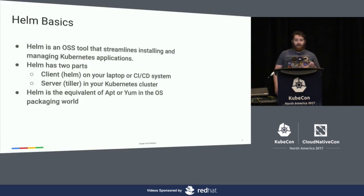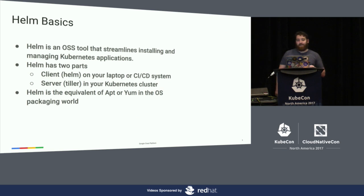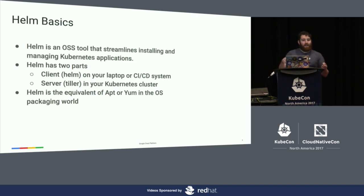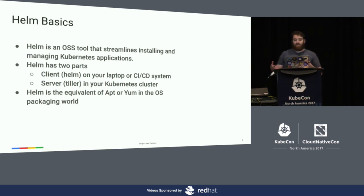Helm 101. Helm is a tool for installing and managing your Kubernetes applications — it helps you with lifecycle management of an application within Kubernetes. It has two parts: you install a client on your laptop, and then inside your Kubernetes cluster you have a server called the tiller, which manages receiving commands and doing the actual work of deploying manifests into Kubernetes. If you're looking for an analog in the operating system world, it would be like apt-get or yum.